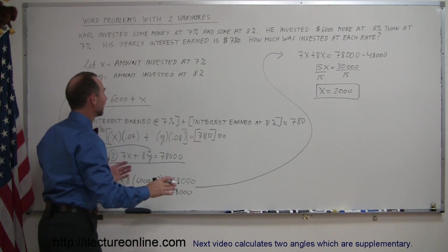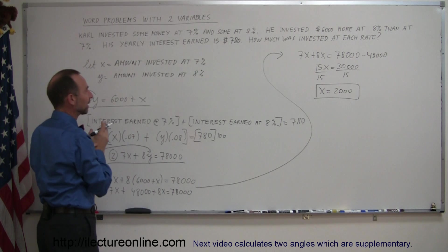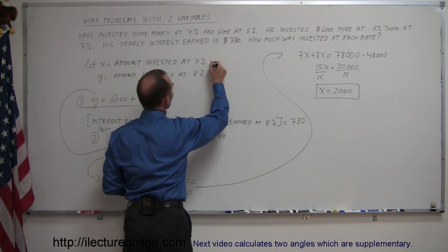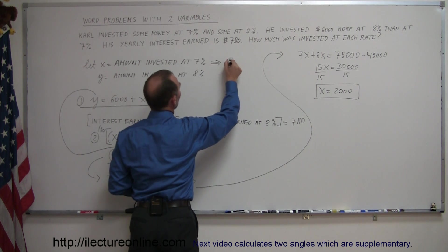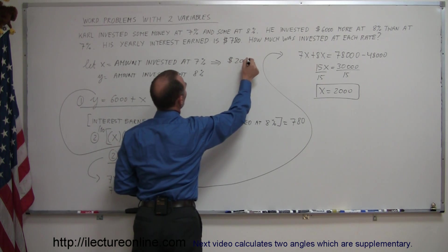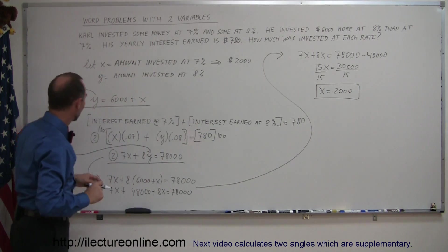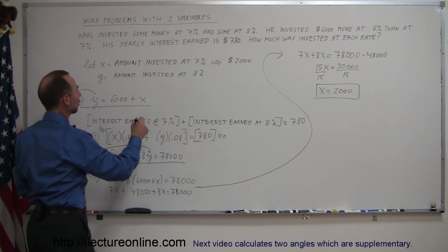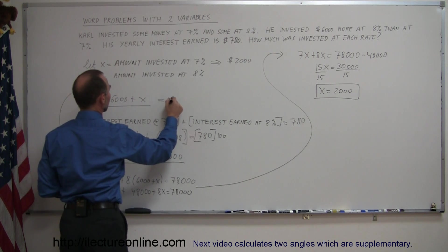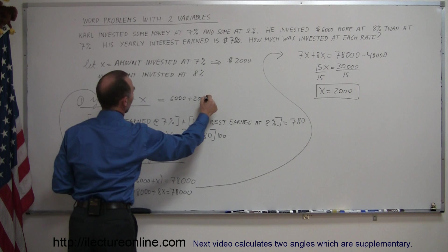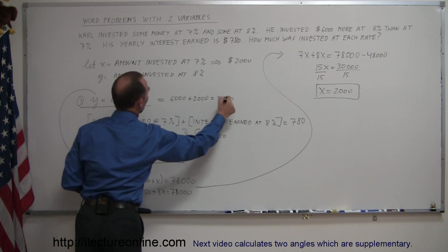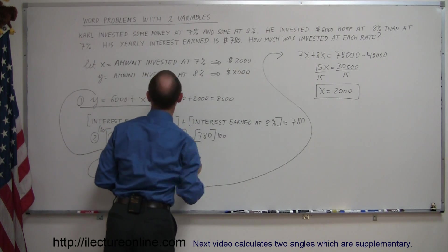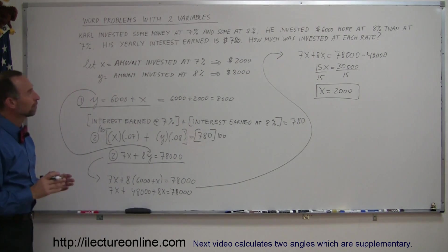Now, what does x represent? Good thing I wrote the exact definitions down. x represented the amount invested at 7%, which means that I invested $2,000 at 7%. Since y, which is the amount invested at 8%, is $6,000 more, this is therefore equal to 6,000 plus 2,000, which is 8,000. So I can say that I invested $8,000 at 8%.